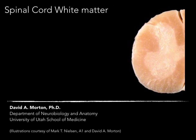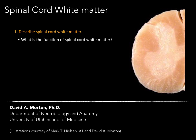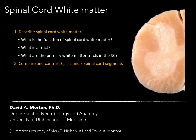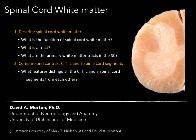We're now going to talk about spinal cord white matter, and our objectives are: one, describe spinal cord white matter by answering these questions: what's the function of spinal cord white matter? What is a tract? What are the primary white matter tracts in the spinal cord? And our second objective is to compare and contrast cervical, thoracic, lumbar, and sacral spinal cord segments, answering what features distinguish the spinal cord segments from each other.